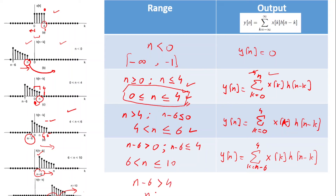When n−6 goes beyond 4, that is n > 10, there is no overlap between x[k] and h[n−k], so y[n] = 0 again. Once all five cases are identified, we proceed to evaluate the summations in closed form.